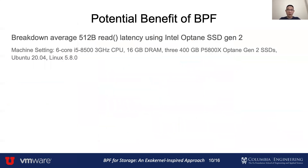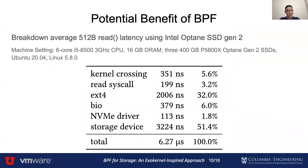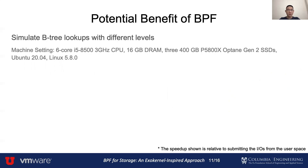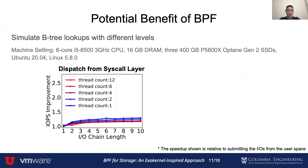To learn about the potential benefit of downloading application logic into the kernel using BPF functions, we break down the average 512-byte read latency using Intel Optane SSD Gen 2. The result shows that by just eliminating the kernel boundary crossing we can eliminate 5.6% of the latency. If we can resubmit the next request in the NVMe driver, we can reduce almost half of the latency. Then we simulate B-tree lookup with different B-tree levels. This graph shows the IOPS improvement of dispatching the next request in the syscall layer with different B-tree depths and thread counts.